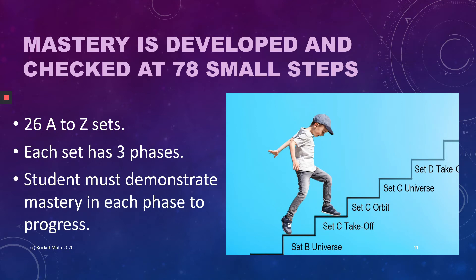The online game develops and checks mastery at each of 78 small steps within each learning track. There are 26 A-to-Z sets that students learn, but each set has three phases of learning: a takeoff phase with just the new facts, orbit with recent facts, and then universe with cumulative review of all the facts learned so far. The student has to demonstrate mastery in each phase before they can go on to the next.